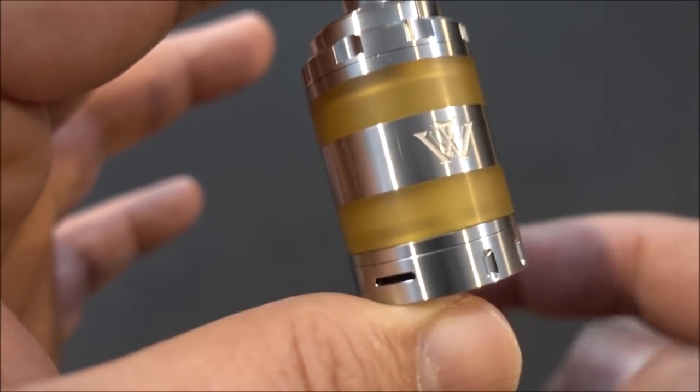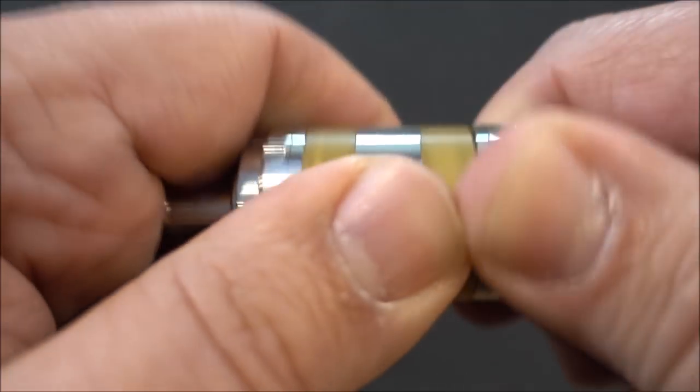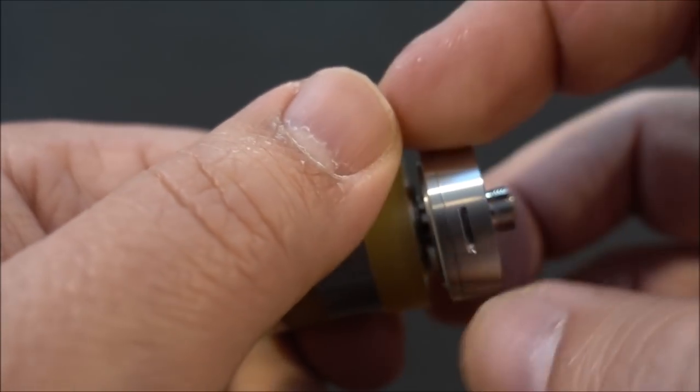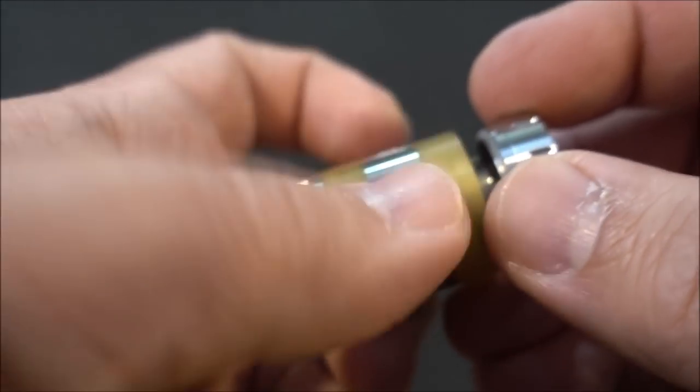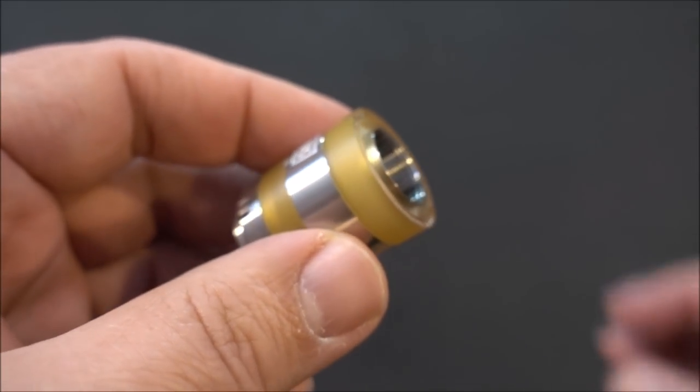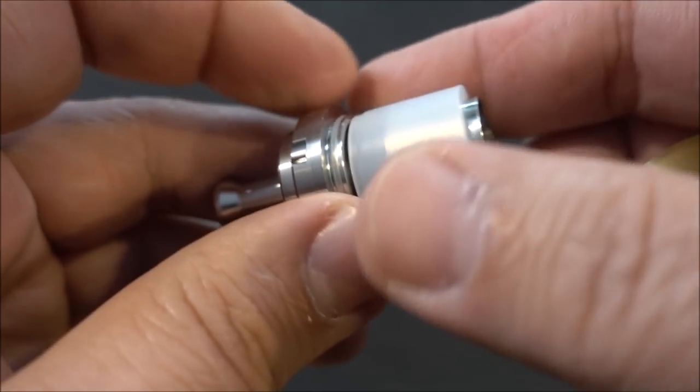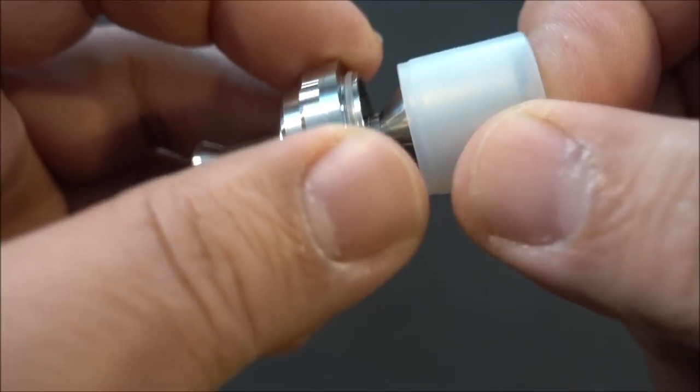As you can see there, we do have Ultem and Ultem and then a stainless steel ring. Let's take this apart - just unscrew the base. Pop this off and you could see there's that piece I was talking about to make it into a 2 ml e-liquid capacity. We'll pull off the condom.